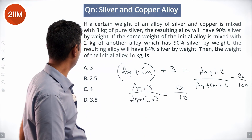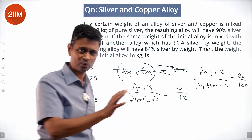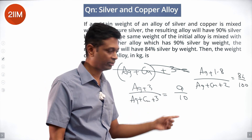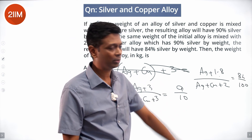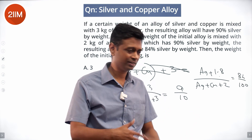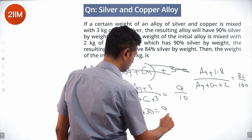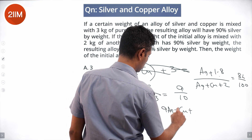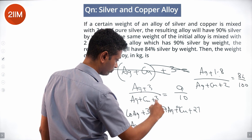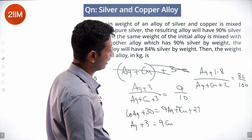Weight of silver in alloy plus 3 divided by weight of alloy plus 3 is 9/10. Weight of silver plus 1.8 — because 90% of 2 — divided by weight of alloy plus 2 is 84/100. Cross-multiplying: 10·Ag + 30 = 9·Ag + 9·Cu + 27, giving Ag + 3 = 9·Cu.